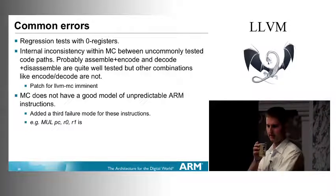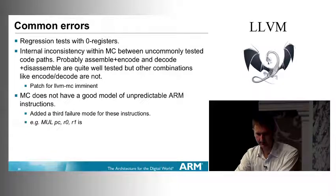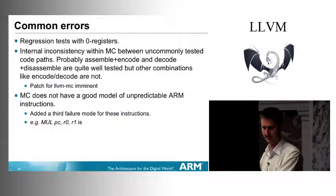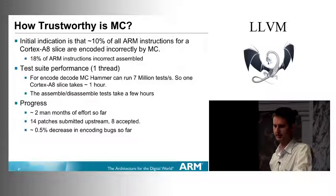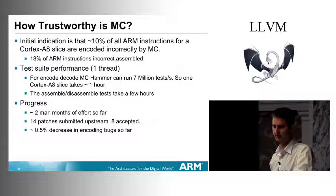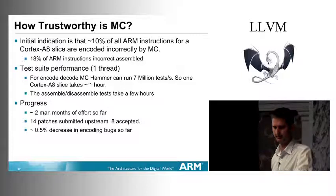As for how trustworthy the MC layer is now for ARM: our initial figure is that roughly 10% of all instruction encodings are incorrectly encoded by MC at the moment. We think it's roughly 18% for the assembly step — 18% of correct MC insts are incorrectly assembled. We're firming these numbers up as we go along, ironing out corner cases in our test suite and getting more accurate readings.